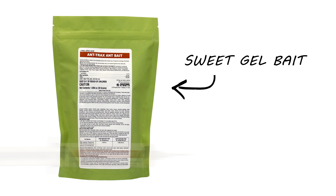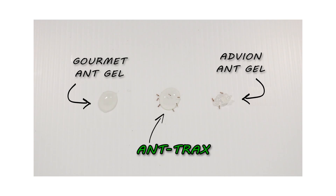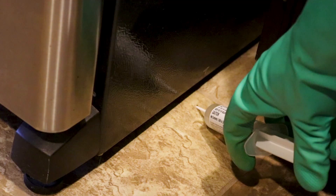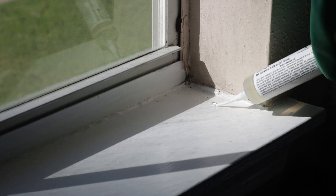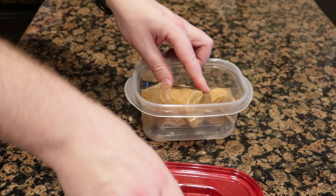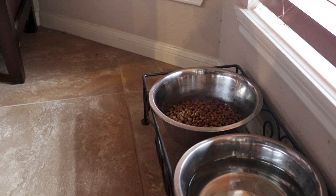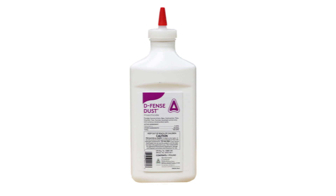Next, use Anttrax Ant Gel Bait. Anttrax is a sweet gel bait that comes in a syringe for easy application, and has been tested to be one of the most effective baits available. Apply Anttrax in locations where ant activity is common, such as countertops, near appliances, near baseboards, and entry points. When baiting, be sure to remove any competing food sources by storing food in airtight containers or picking up pet food.